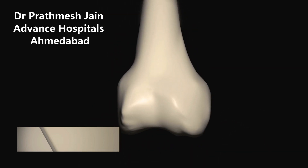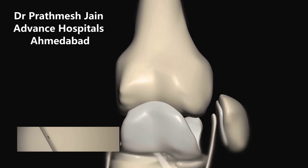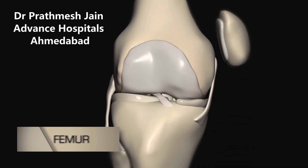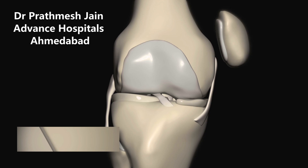Above that is the large bone of the thigh which is called the femur. This is the longest, strongest, and broadest bone of the body and it transmits the weight of the body down to the tibia.